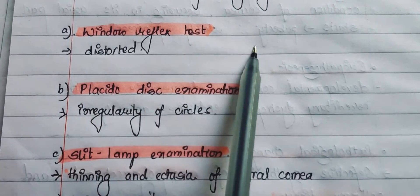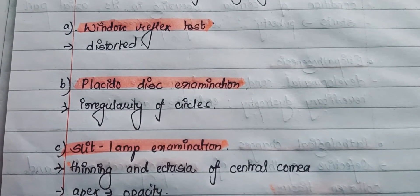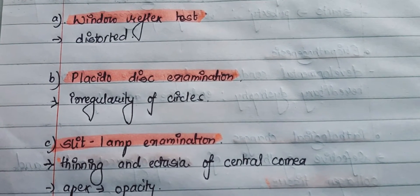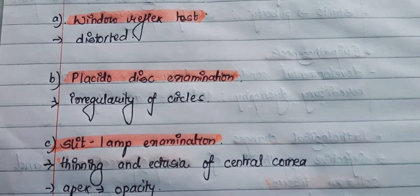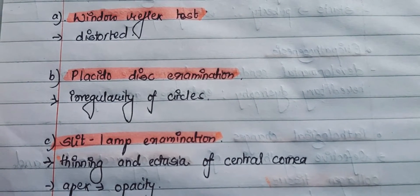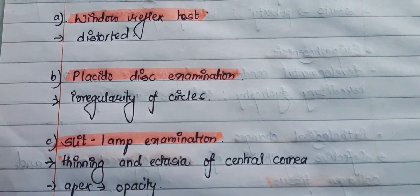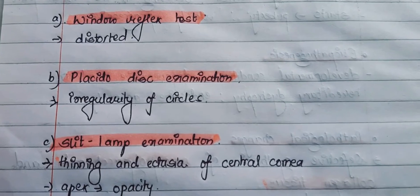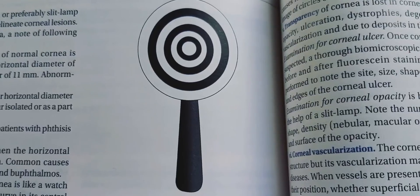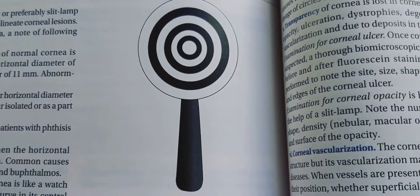Window reflex test: The patient is asked to sit in front of a window and the minified image of the window formed by the cornea is observed. In a normal cornea, the image formed is uniform and regular, whereas in a person suffering from keratoconus, the image is distorted.